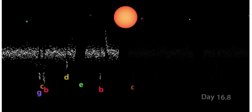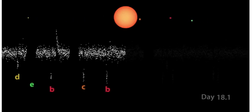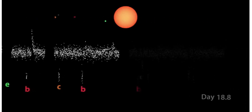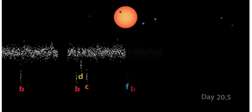Spitzer devoted over 21 days of nearly continuous observations to TRAPPIST-1, pausing only to send data back to Earth. It was looking for tiny dips in the star's brightness when the circling planets pass in front of the star or transit.